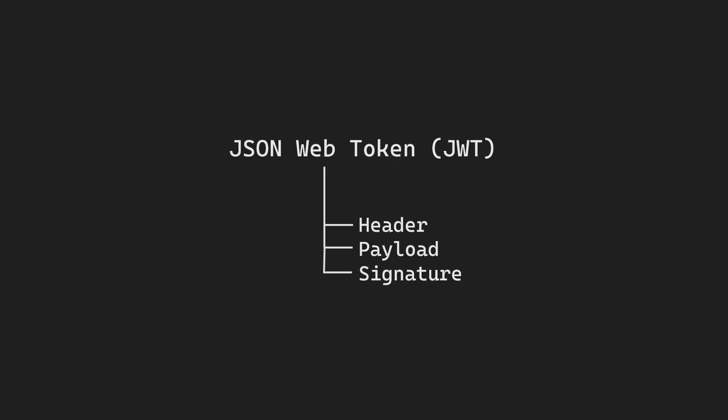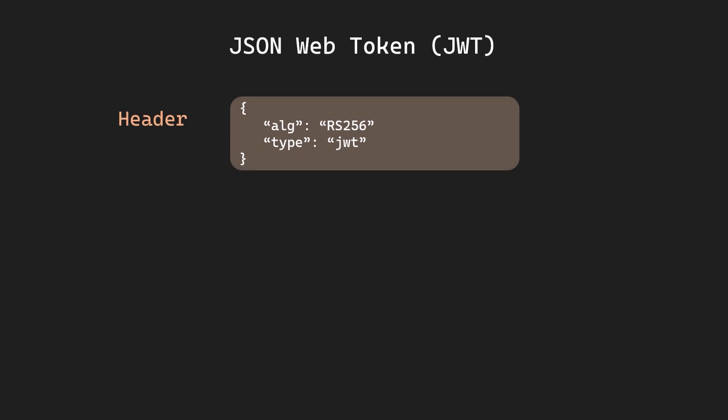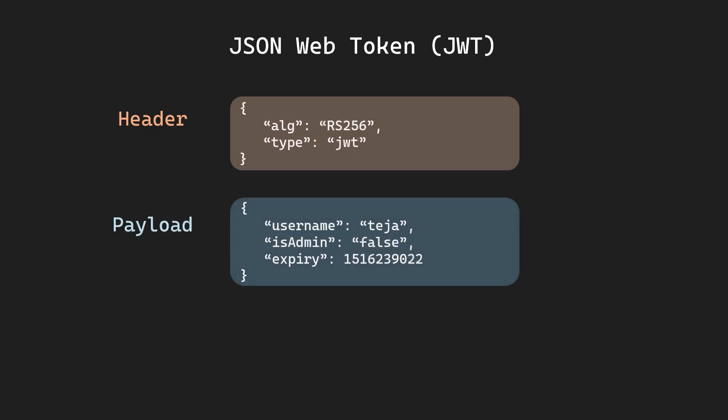The key difference between session authentication and token authentication is that in session authentication the server needs to store the session information in its backend, but in token authentication that can be eliminated. A JWT token contains three sections: header, payload, and signature. The header contains the cryptographic algorithm used for signing and the token type. The payload contains actual data about the user like username, permissions, and token expiry. Make sure you do not include sensitive details in the payload because everything in a JWT can be decoded since it's just Base64.